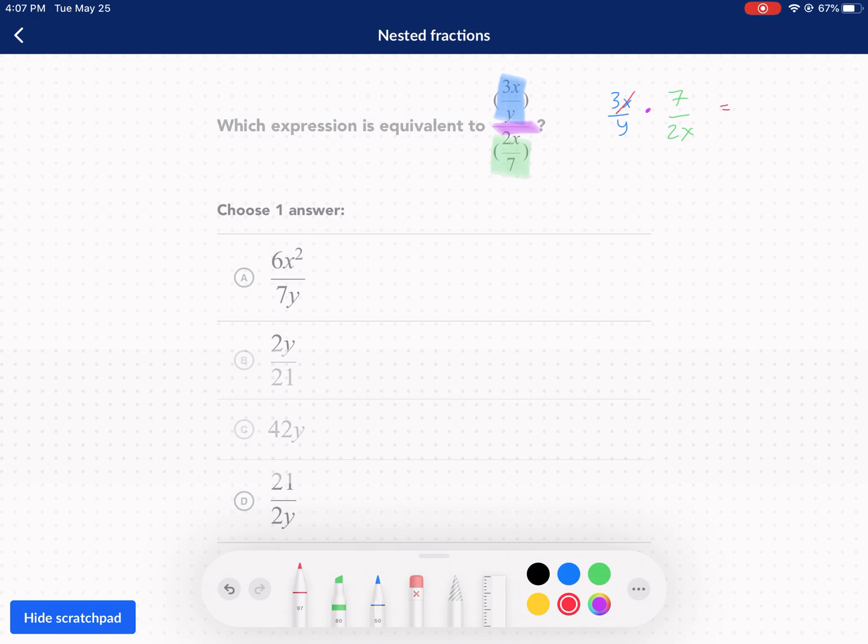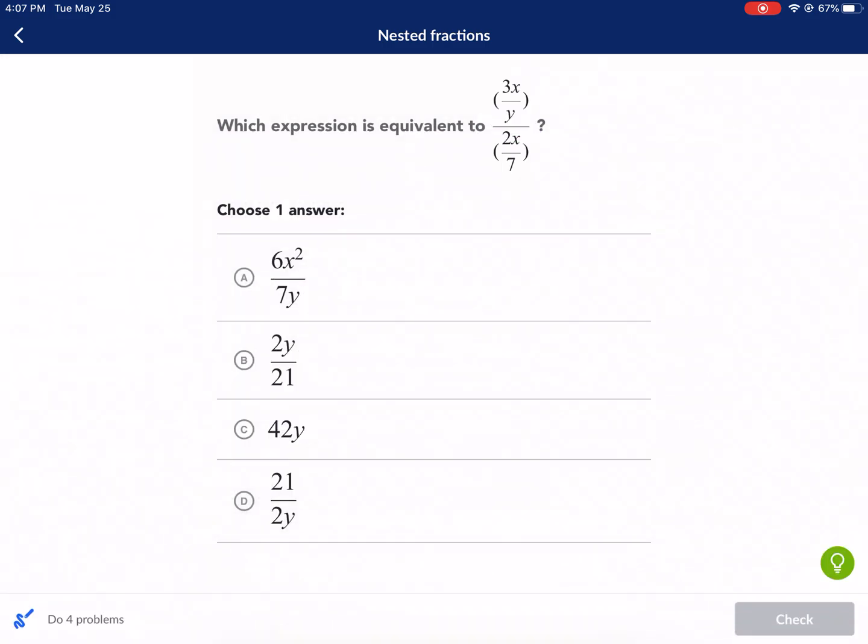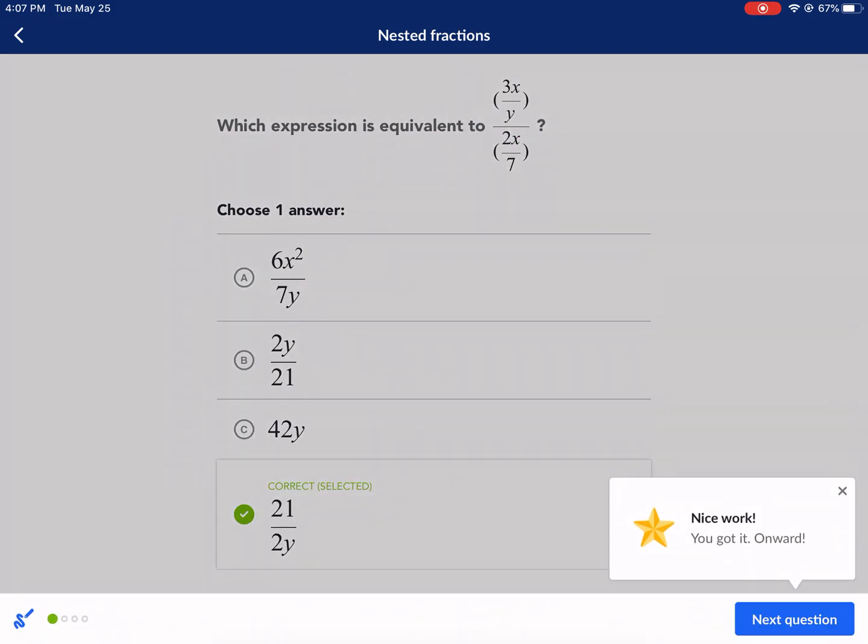In this case, we have an x here and an x here. There's nothing else that can cancel or reduce, so we're going to do 7 times 3 is 21. And then we have 2y in the bottom. We're going to look for this as our answer. And letter D is our guy, 21 over 2y. Check it. Next question.